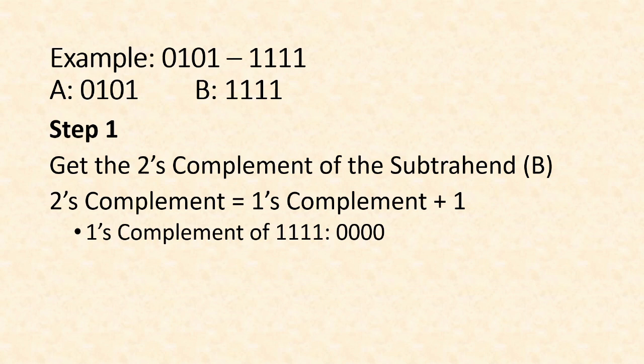After we get the one's complement, we will add one to it. So our one's complement is 0000. If we add one, it will become 0001. This is now the two's complement of the subtrahend B, which is 1111. So we know already the two's complement of 1111. It is 0001.